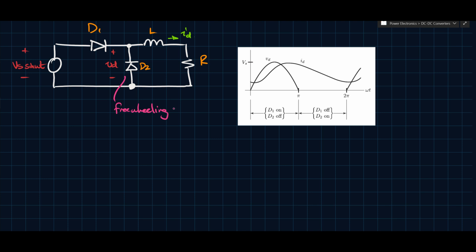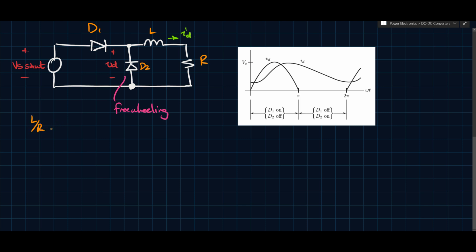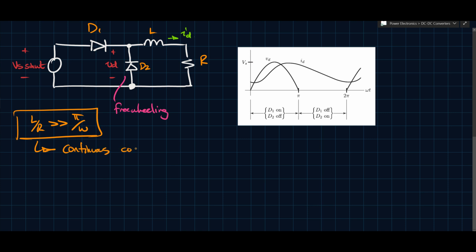If L is large enough, Id never goes to zero. It's not enough to simply add diode D2 — L has to be large enough. This means L/R should be much larger than π/ω. This is the condition for continuous conduction. The idea is that you want your time constant to be large enough so that Id doesn't decay to zero quickly. Otherwise, the introduction of D2 will not do anything for you.